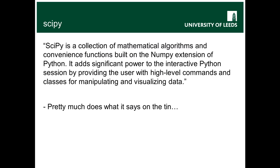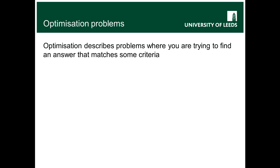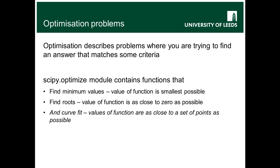The particular set of problems we're going to look at today are what are generally called optimization problems. Optimization describes any kind of problem where you're trying to find an answer that matches some criteria — for example, finding the minimum value of a function, or finding roots where it's as close to zero as possible. There's also another very important class: finding parameter values such that a function describes a set of data points as closely as possible — in other words, curve fitting.